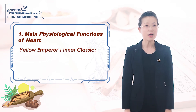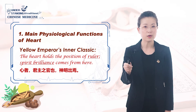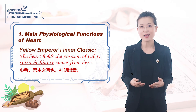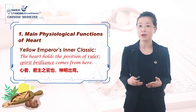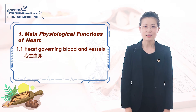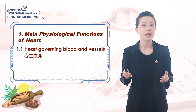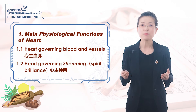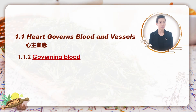It is recorded in the Yellow Emperor's Classic: 'The heart holds the position of ruler. Spirit brilliance comes from here.' Heart is regarded as the monarch of the body, so its importance is apparent. The main functions of heart can be described as heart governing blood and vessels (心主血脉), and heart governing 神明. For the idea of heart governing blood, there are two implications.